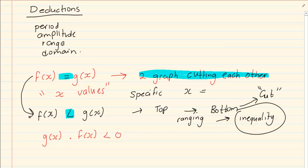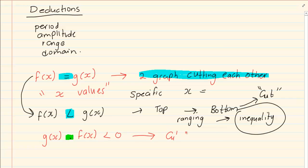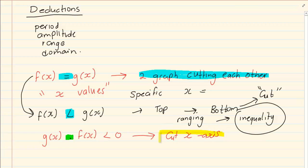It's exactly linked to the first one. But when it's g(x) × f(x), this is a specific reference to where it cuts the x-axis. The emphasis is not on where the two graphs meet, but rather where at any point one of the graphs cuts the x-axis.